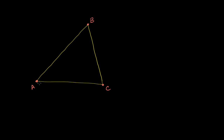I have triangle ABC here. In the last video, we started to explore some of the properties of points that are on angle bisectors. What I want to do in this video is to see what happens when we apply some of those ideas to triangles, or the angles in triangles.